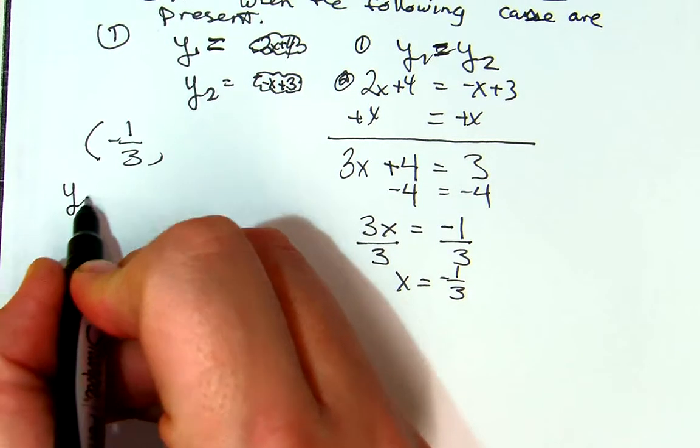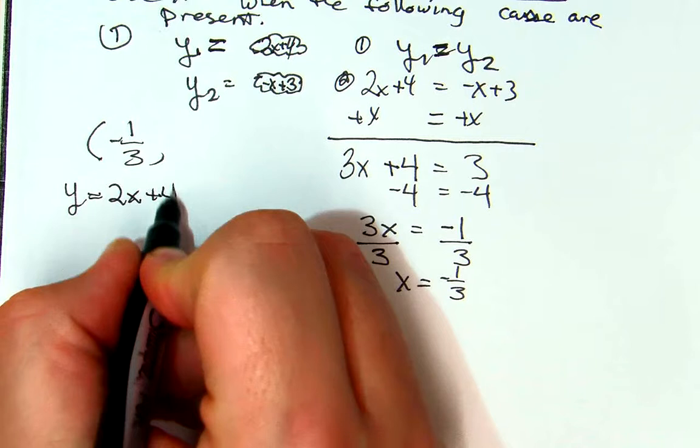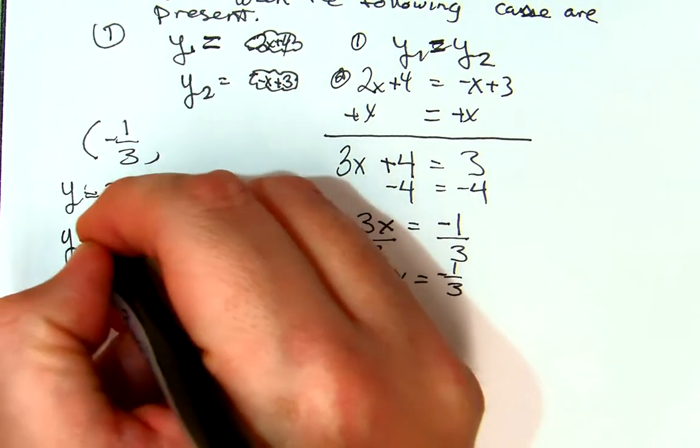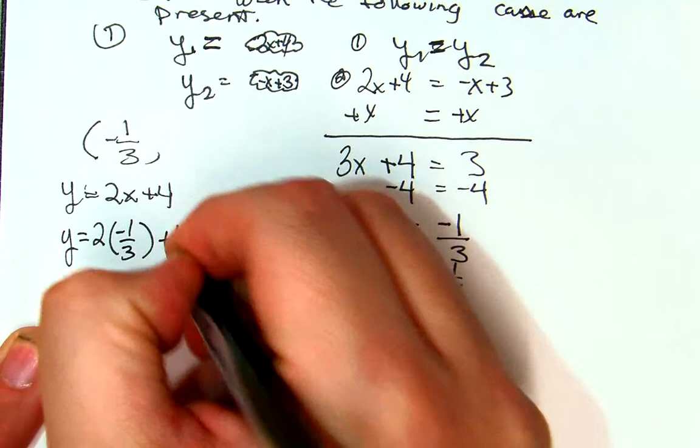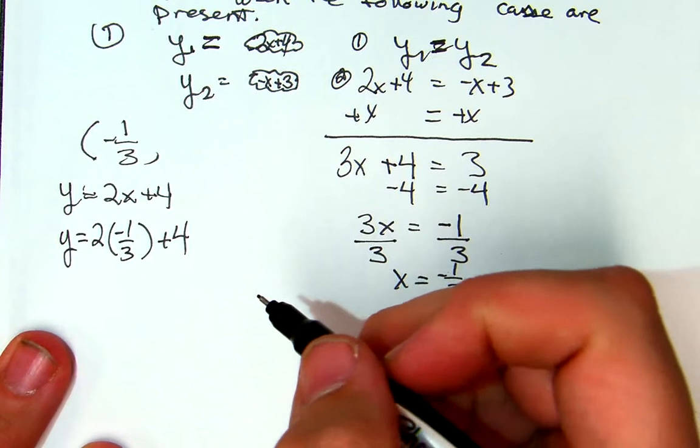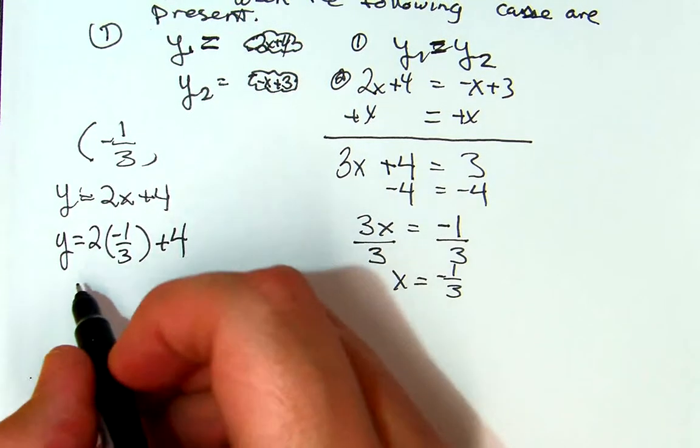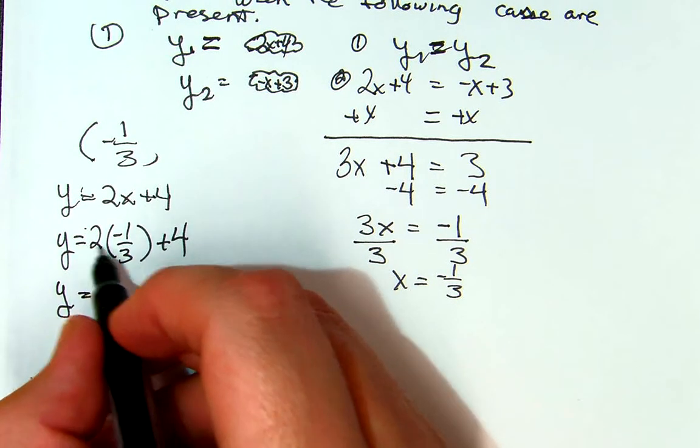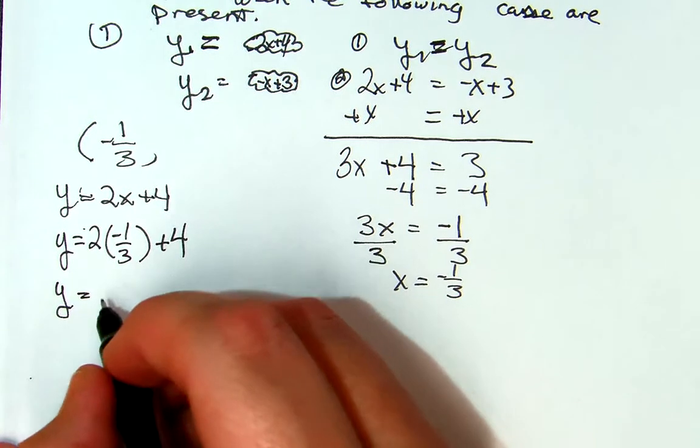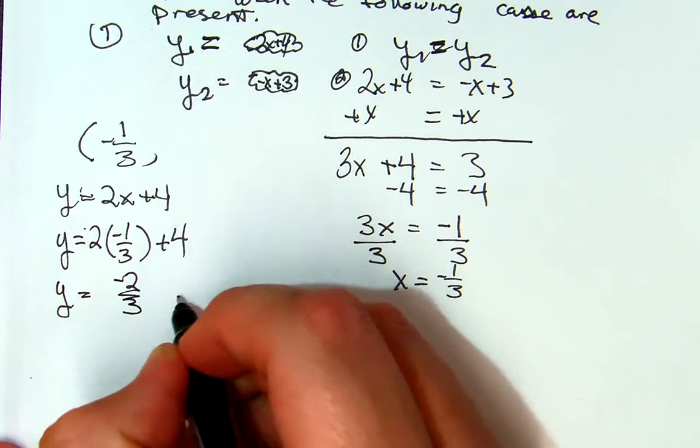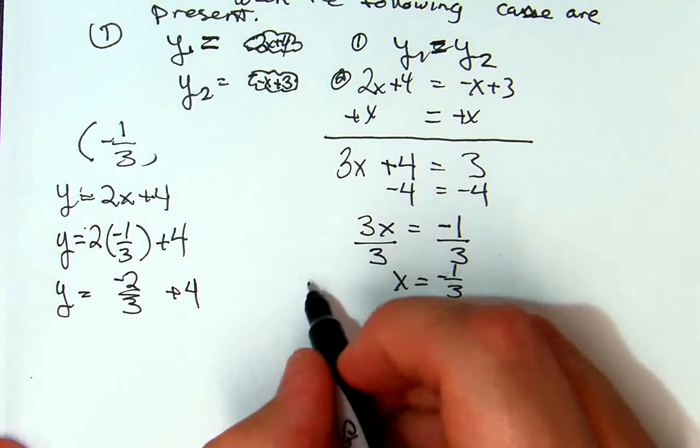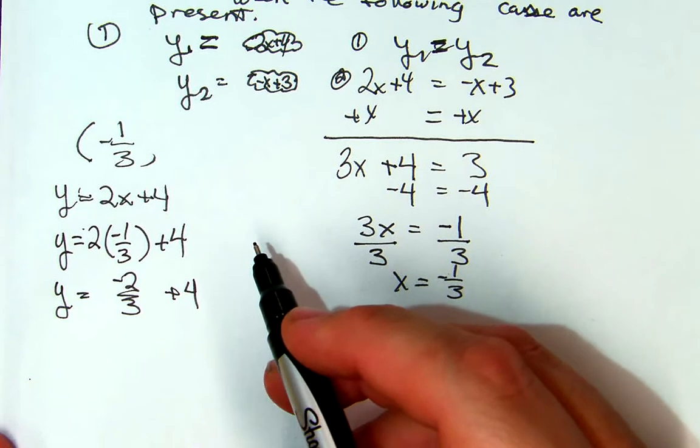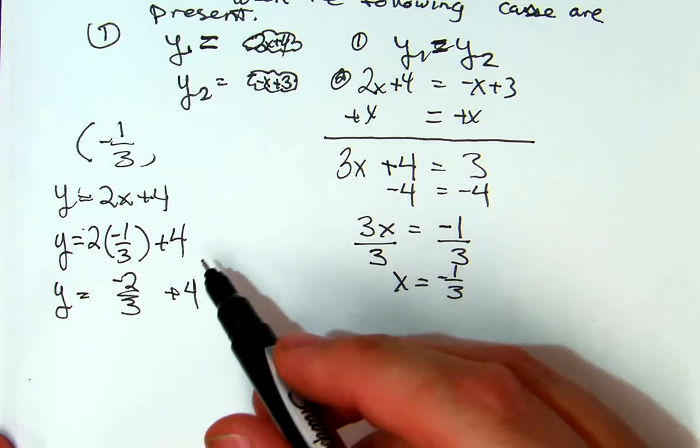So if I use y equals 2x plus 4, and I know my x is equal to negative 1 third, I'll say y equals 2 times negative 1 third plus 4. You can't be afraid to deal with fractions, because fractions are a way of life. They're just a number. 2 times negative 1 third, a whole number times a fraction, 2 times the numerator. So I'm going to get negative 2 thirds plus 4. So can I add those as they are? No, because one's a fraction, one's a whole number. I can only add them if they're all fractions and the fractions have to have the same denominator.